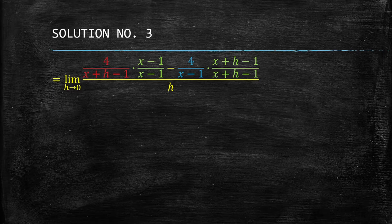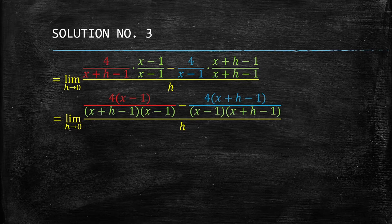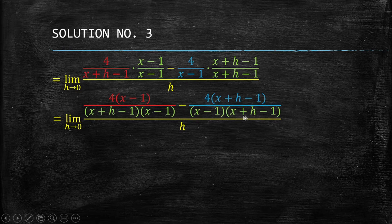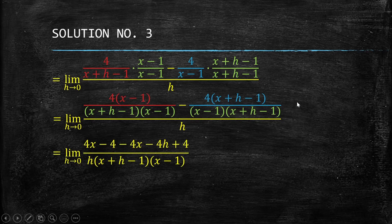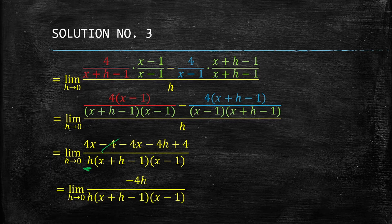The LCD is (x + h − 1)(x − 1). We multiply each term by the lacking factors, giving us [4(x − 1) − 4(x + h − 1)] all over [(x + h − 1)(x − 1)], divided by h. We combine the denominators since they are similar, and then h moves to the denominator, simplifying further to −4h in the numerator.